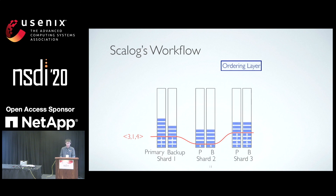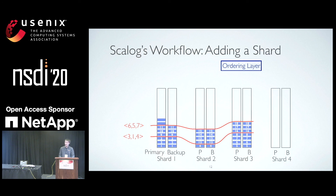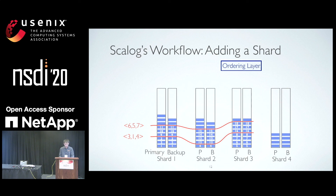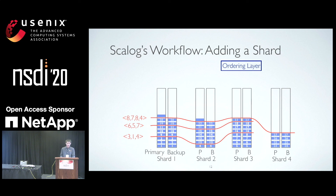The same process keeps repeating — new cuts are generated and new sequence numbers are assigned. This mechanism not only allows decoupling ordering from data dissemination, but can easily accommodate reconfigurations. When a new shard is added, the primary of the new shard can immediately start accepting records from clients and replicate them to its backups. Other storage servers do not need to become aware of the new shard — they simply keep going. Periodically, each storage server reports the number of stored records to the ordering layer, which creates a new global cut with that extra element representing durable records in the new shard. The deterministic algorithm then assigns sequence numbers accordingly. This is all it takes to add a new shard.